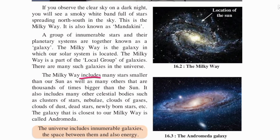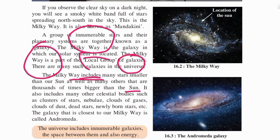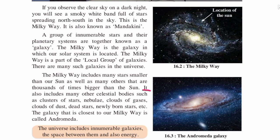The Milky Way includes many stars smaller than our sun, as well as many others that are thousands of times bigger than the sun. Our sun is a big star, but there are many other stars in our galaxy. The Milky Way also contains clusters of stars, nebulae, clouds of gases, clouds of dust, dead stars, and newly born stars.